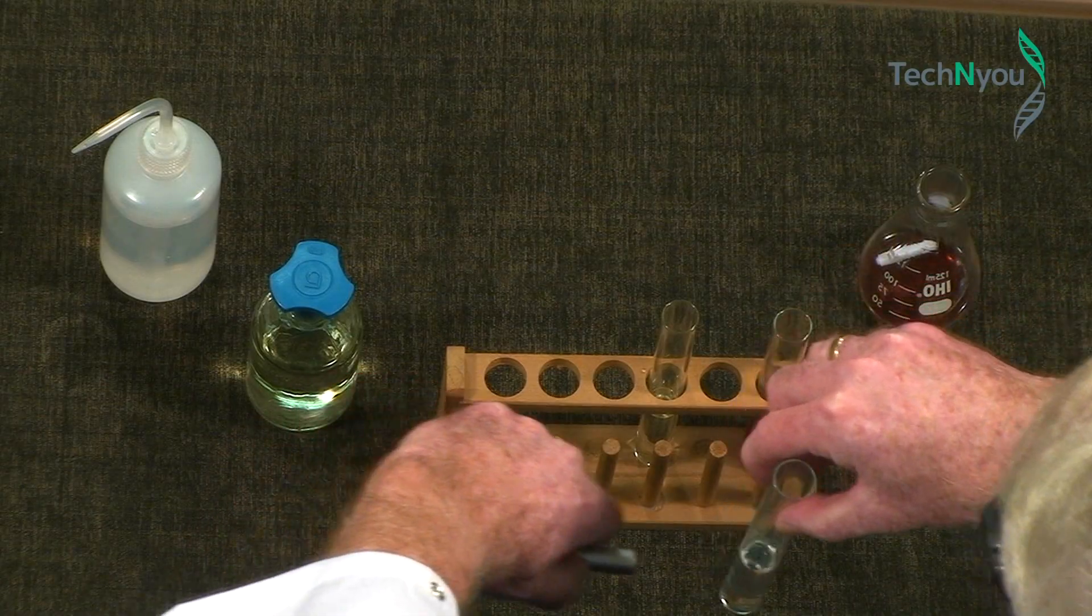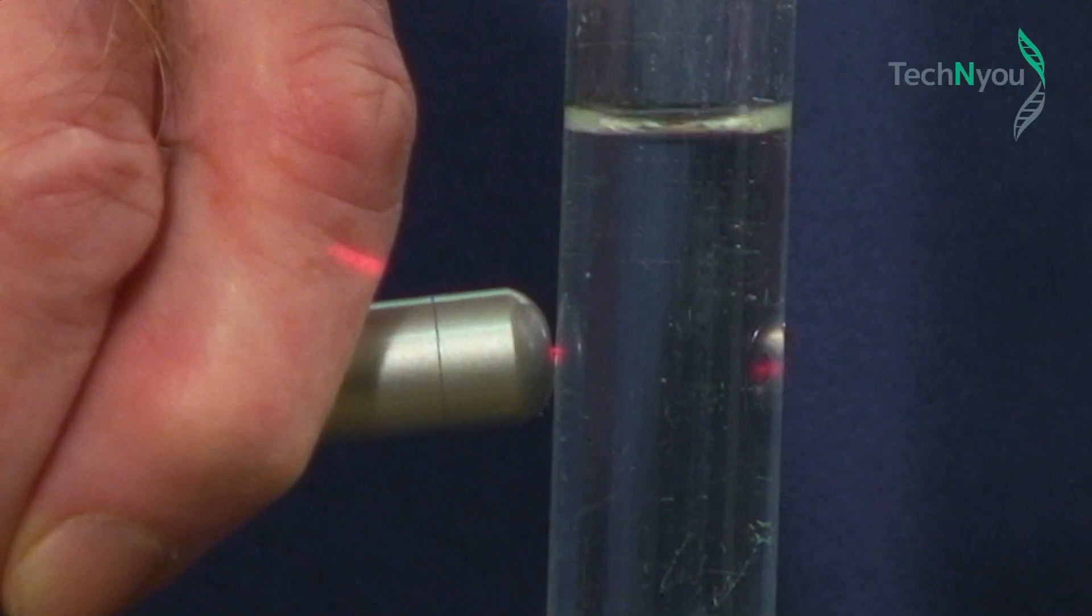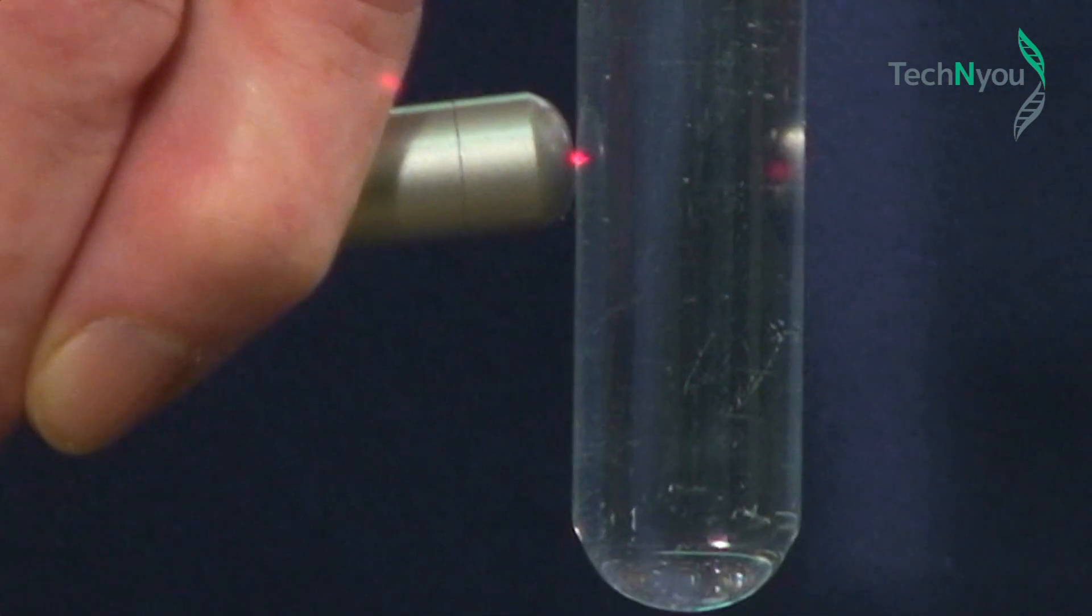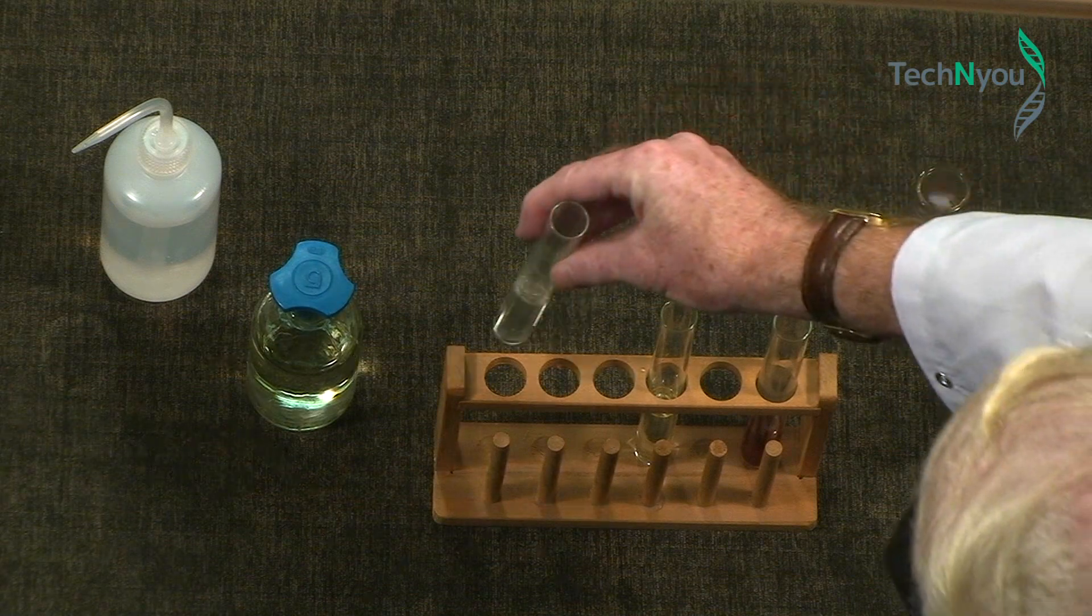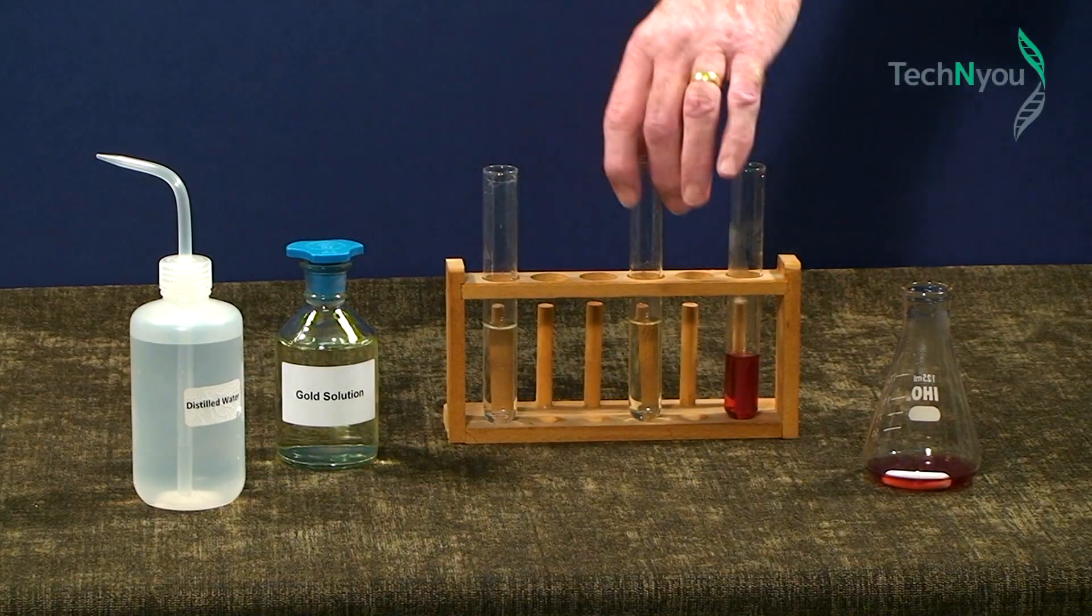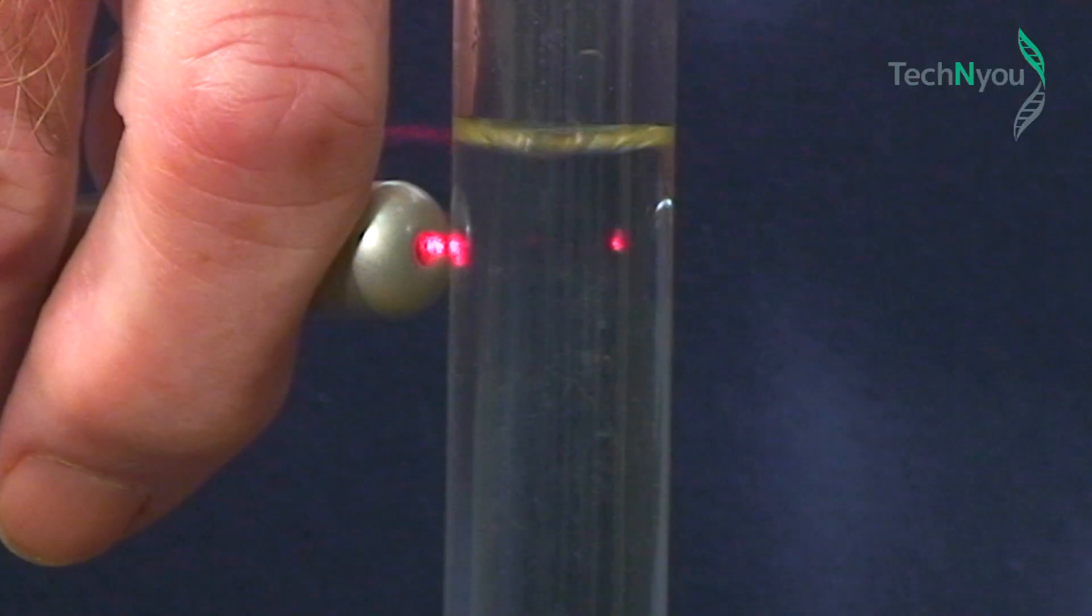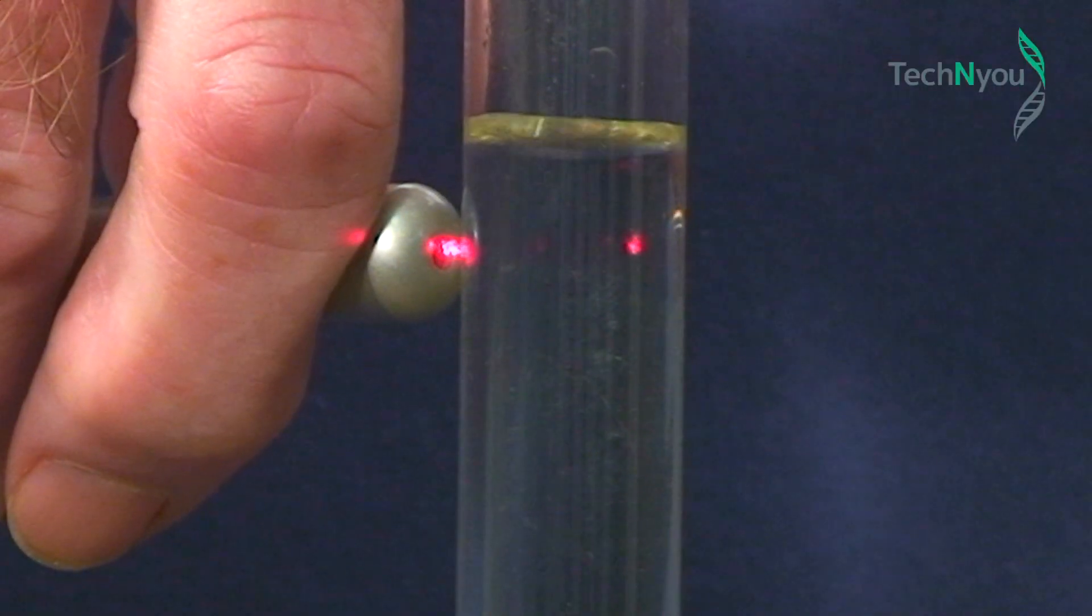If we shine this beam through the test tube with distilled water, you'll see its entry and exit points, that's all. There is no visible passage of light. If we shine it through the original gold chloride solution, we get the same result. No passage of light. It's just a bright spot on either side.